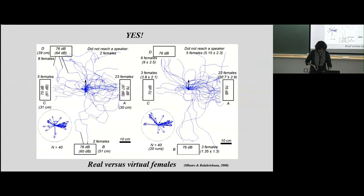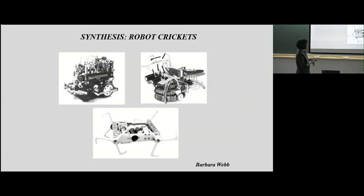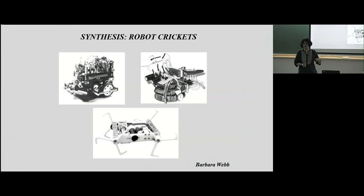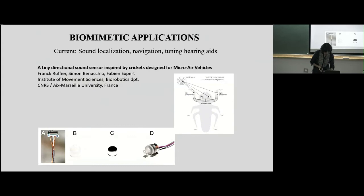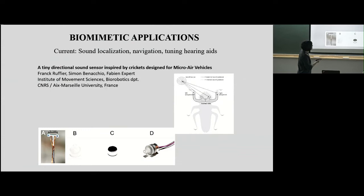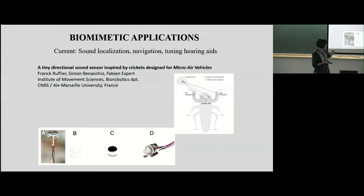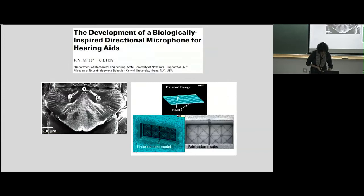Other groups have had impact by building robots based on some of these principles to do sound-based navigation, some of which have been very successful. Some applications include building small directional sound sensors for micro air vehicles. There is also an even smaller fly — a parasitoid fly that parasitizes crickets — about the size of a housefly, which uses the song of the cricket to locate it and lay its eggs. Those flies are even smaller and can also orient and locate the cricket's call.